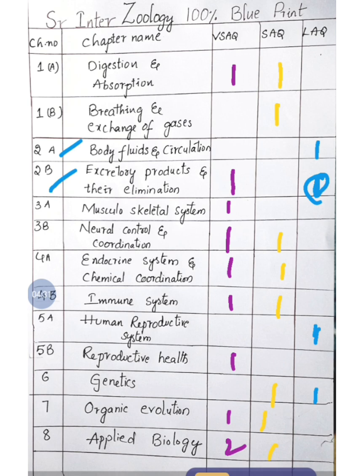Immune System adds one more, making a total of ten very short answer questions. Last year 70% syllabus was applicable so the first chapter was deleted, but this year the first chapter is included. So if you read Chapter 1 thoroughly, six marks are in your hand — one very short answer and one short answer. From Chapter 2, four marks by one short answer. Chapter 3, Body Fluids and Circulation, gives one long answer, and Excretory Products gives two marks. Chapter 4 long answer, Musculoskeletal System short answer, Neural Coordination six marks, Endocrinology six marks, Immune System six marks.